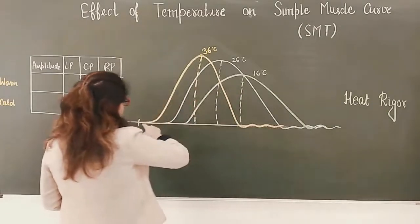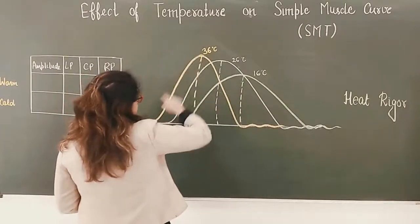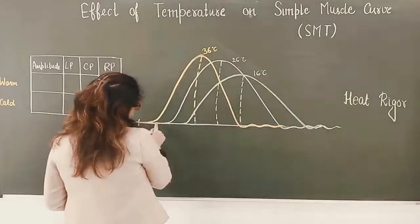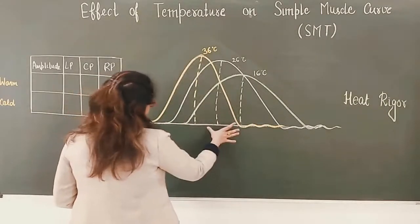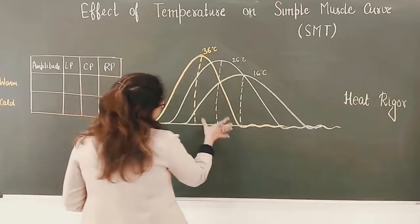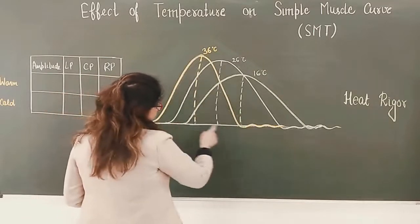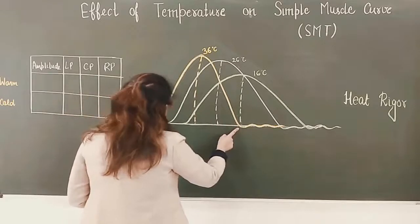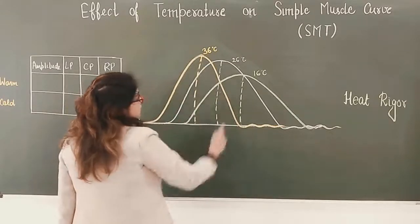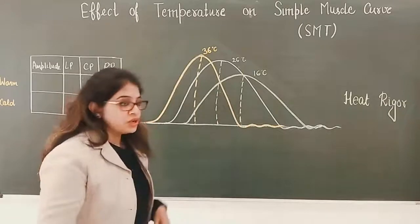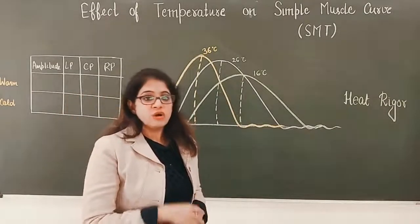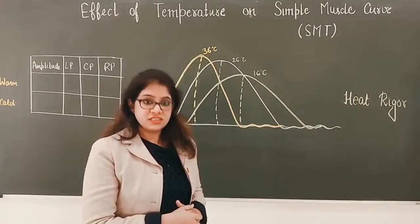When we pour warm saline, the height of the curve increases and the duration of all phases decreases — the latent phase, contraction phase, and relaxation phase. So the duration of all phases has decreased and the amplitude of the curve has increased. In other words, the force of contraction has increased and the velocity of contraction has increased.